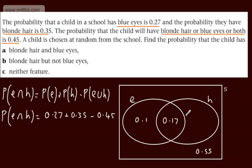And blonde hair, we've got 0.35. I've already got 0.17, so this is going to be 0.18. And if you add all of these up, you're going to end up with 1.